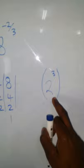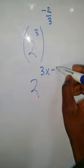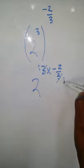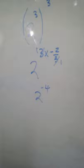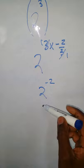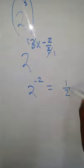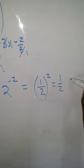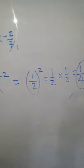So 8 is the same as 2 to the power 3. We raise it to the power negative two-thirds, so we multiply the powers: the threes cancel, leaving 2 to the power negative 2. Negative means inverse, so we have one over 2 squared, which is one over four. One over four is the answer.